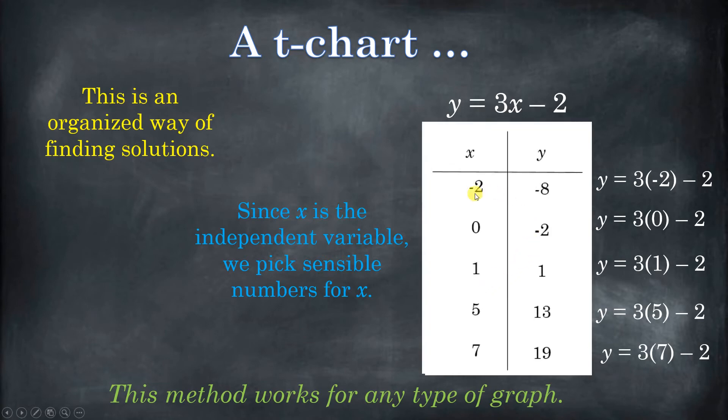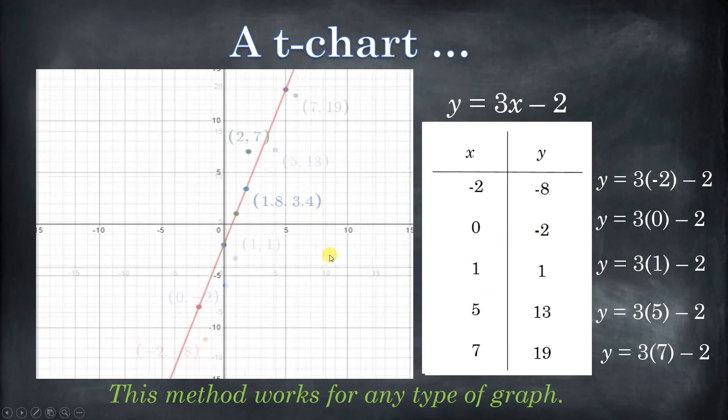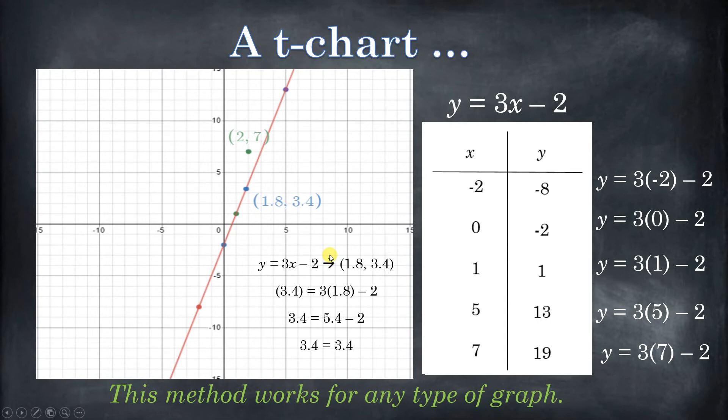And we're going to go ahead and continue that for all of these values. And we just take our numbers, what we get, we plug them right there in for y. And so what we have is we actually have ordered pairs. We have negative 2, negative 8, 0, negative 2, 1, 1, 5, 13, and 7, 19. So a t-chart, really useful. And it's useful because it gives you a way to track your mistakes. So if you plot these points and one of them doesn't line up, you can check your work and see where your mistake was. And that will give you confidence. When you find a mistake, it gives you confidence that you are now correct.